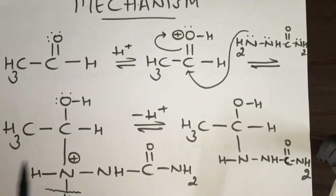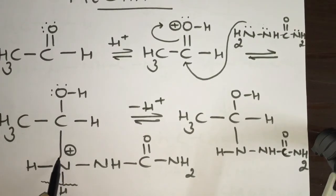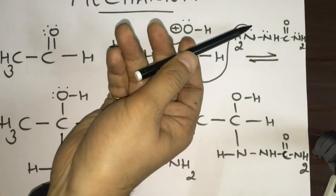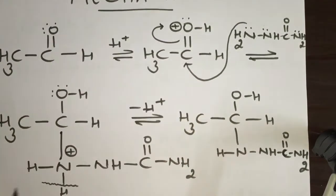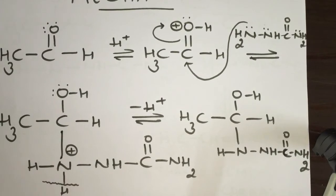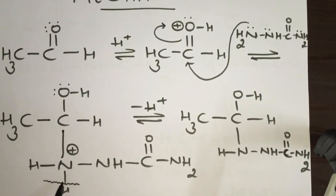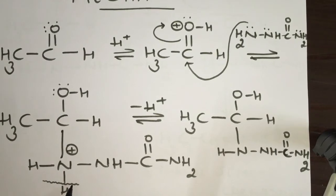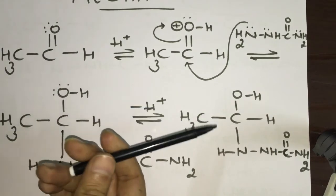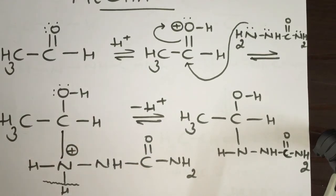After the nucleophilic attack, the new C–N bond forms using the two electrons of nitrogen. This leaves nitrogen with a positive charge; deprotonation then occurs since oxygen is electronegative and the positive charge is not stable. We end up getting the nucleophilic addition product.